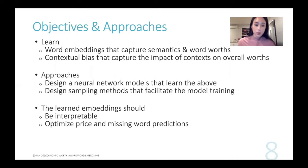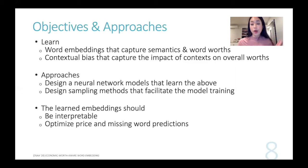The next thing is we also want to learn the contextual bias — biases that are able to capture the impact of context on the overall words. The approach we took is to design a neural network model that learned the above two. And also, in order to facilitate the model training, we introduced two types of sampling methods that sample the input data to help the training and achieve both embeddings to be learned.